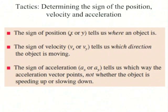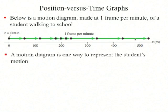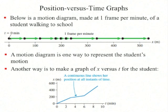The sign of position (x or y) tells us which side of the zero point the object is. The sign of velocity (v_x or v_y) tells us which direction the object is moving. The sign of acceleration (a_x or a_y) simply tells us which direction the acceleration vector points. To find out whether the object is speeding up or slowing down, compare the direction of the velocity to the direction of the acceleration. Here's a motion diagram made at one frame per minute of a student walking to school — she goes at constant velocity, then slows down, then speeds up. Another way to represent her motion is a graph of x versus t, which joins the dots with a continuous line to show her positions at all instants of time.